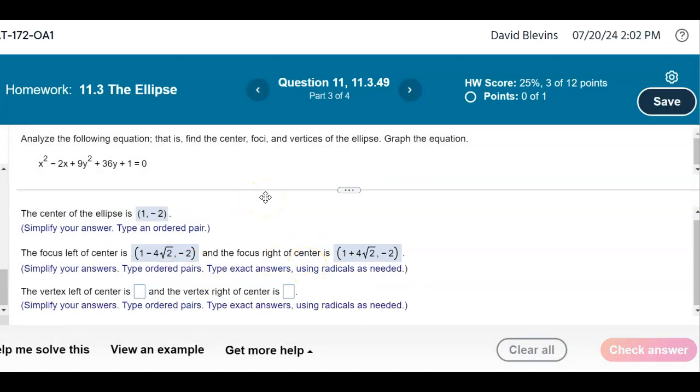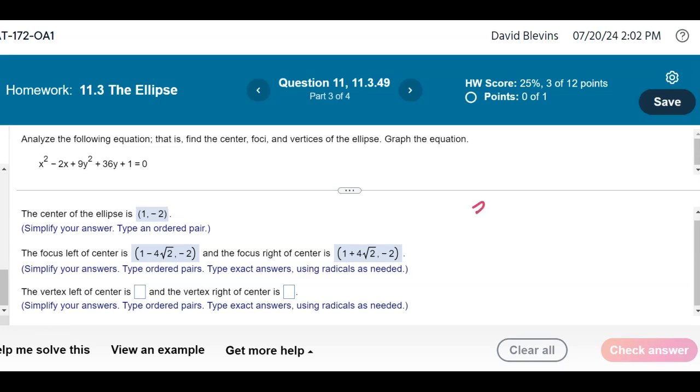My denominators for the x squared part were the larger one, so that means I'm going to go to the left and right by the square root of that denominator. That bigger denominator was 36, the square root of that is 6. So I'm going to go left and right 6 units. I basically did the same thing that I'm doing here for the vertices, but instead of adding and subtracting 4 square root of 2, I'm adding and subtracting 6.